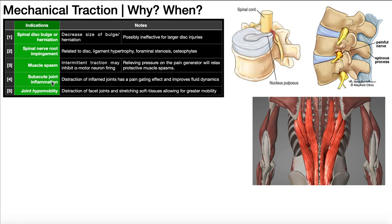The fourth indication is subacute joint inflammation. A key point here is that we do not do this on acute inflammation or acute injuries — it must be at the very least subacute, or sometimes even chronic. Distraction of inflamed joints has a pain-gating effect and improves fluid dynamics. The fifth indication is joint hypomobility, where the intervertebral joints or facet joints are hypomobile. Distraction of the facet joints and stretching those soft tissues allows for greater mobility.